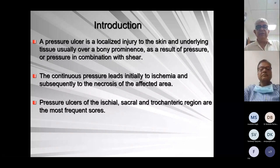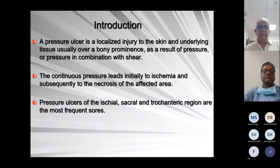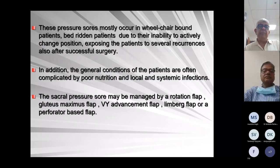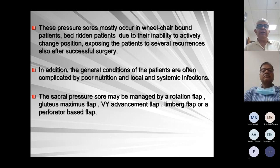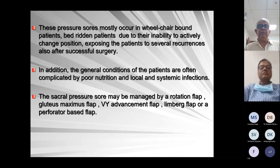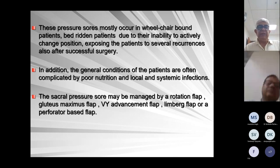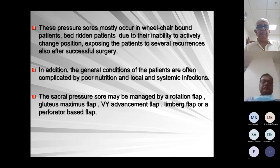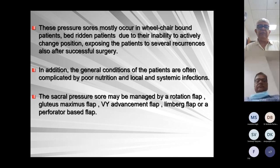Pressure ulcers of the ischial, sacrum, and trochanteric regions are the most common sites. They occur in bed-ridden or wheelchair patients due to inability to actively change position, exposing the patient to recurrences even after surgery. In addition, the general condition of the patient, often with poor nutrition and local and systemic infections, contributes.